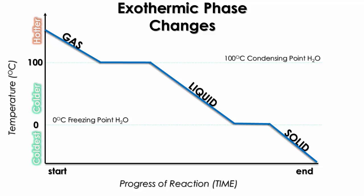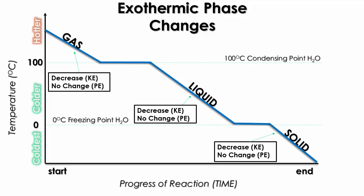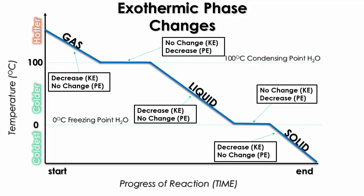As we start to cool our different phases of matter — like gases, liquids, and solids — we'll notice that we have a decrease in kinetic energy. But when they get to the phase changes, there's going to be no change in kinetic energy at all. You'll notice that because the lines do not change on the y-axis; the value does not go up or down. Instead it just changes across the x-axis, which is the amount of time that passes.